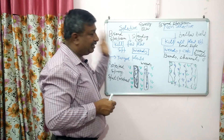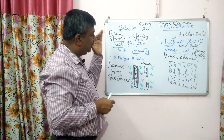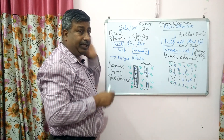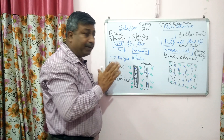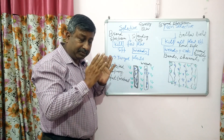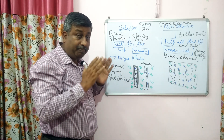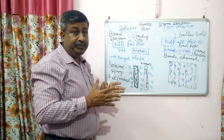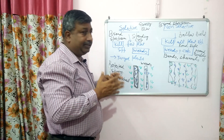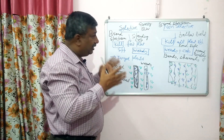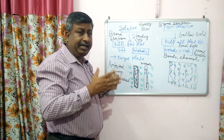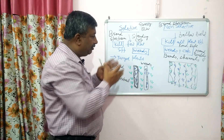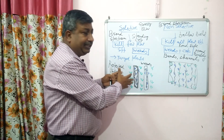Selective herbicides are sprayed only in standing crop. If a selective herbicide is broad spectrum, that is very good, and it kills many weed species, giving a very good yield advantage in the crop.